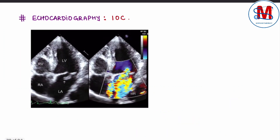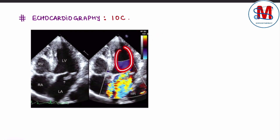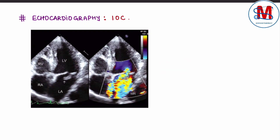Agar hum investigation of choice ki baat karein, to yahan pe hogi echocardiography. Echocardiography mein hum dekhenge left atrial and left ventricular enlargement, jo ek chronic condition mein hota hai. Usi ke saath, agar chordae tendineae rupture hui hai, to woh bhi dekh sakte hain. Aur mitral valve prolapse hai, to bhi hum usse dekh sakte hain.